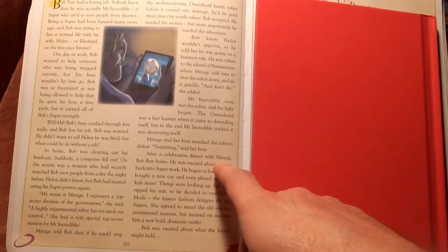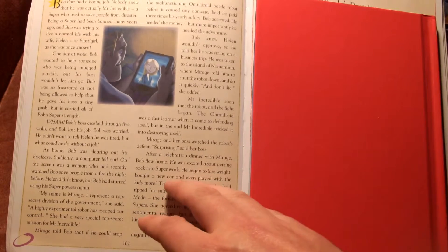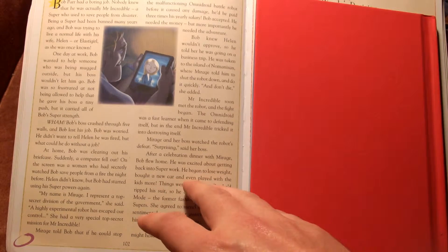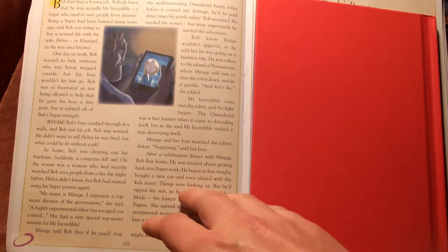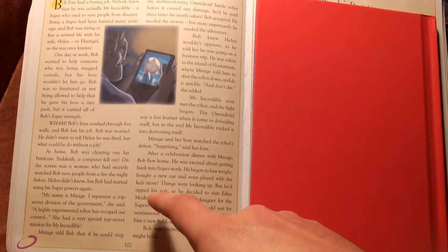After a celebration dinner with Mirage, Bob flew home. He was excited about getting back into super work. He began to lose weight, bought a new car and even played with the kids more. It's a bit harsh.